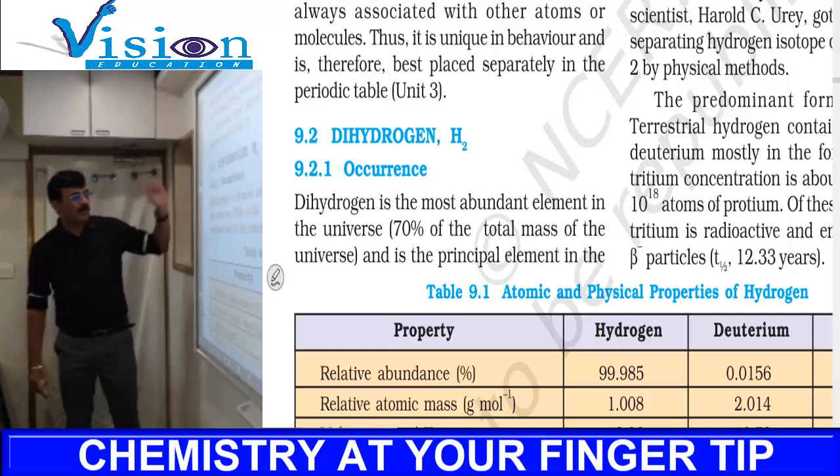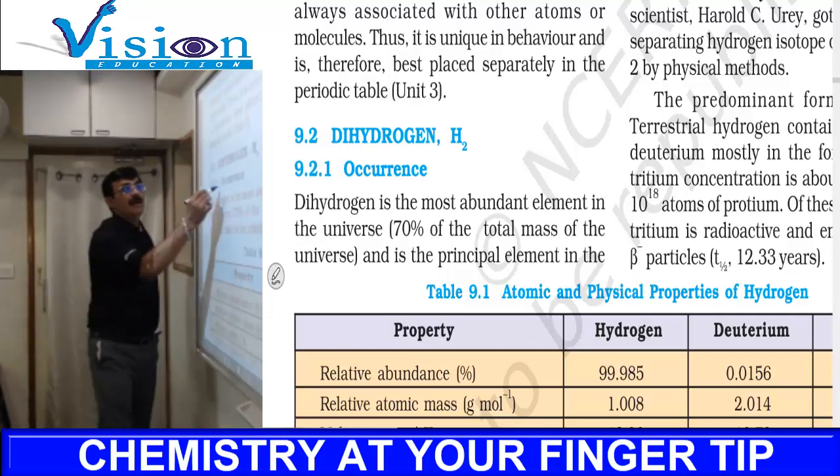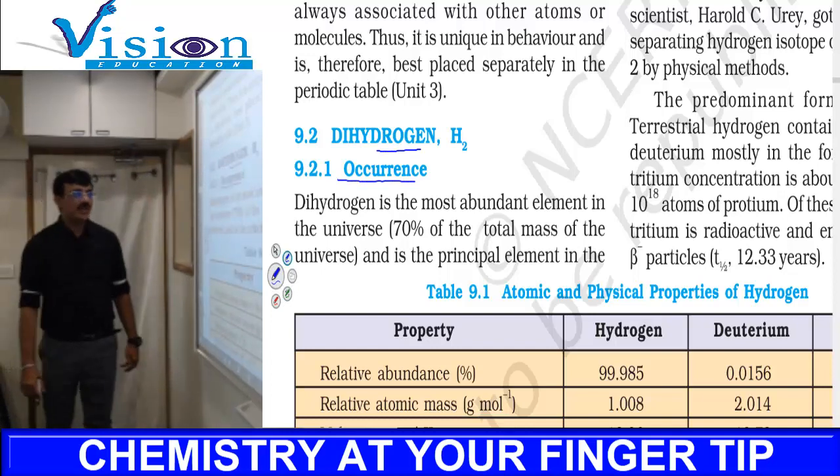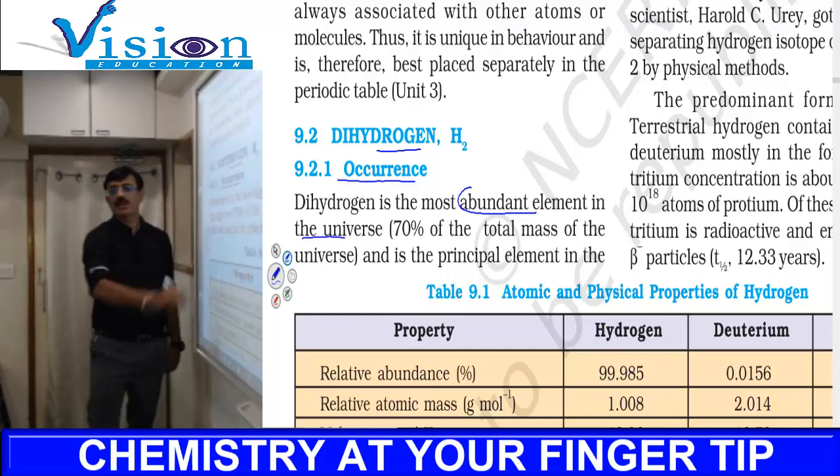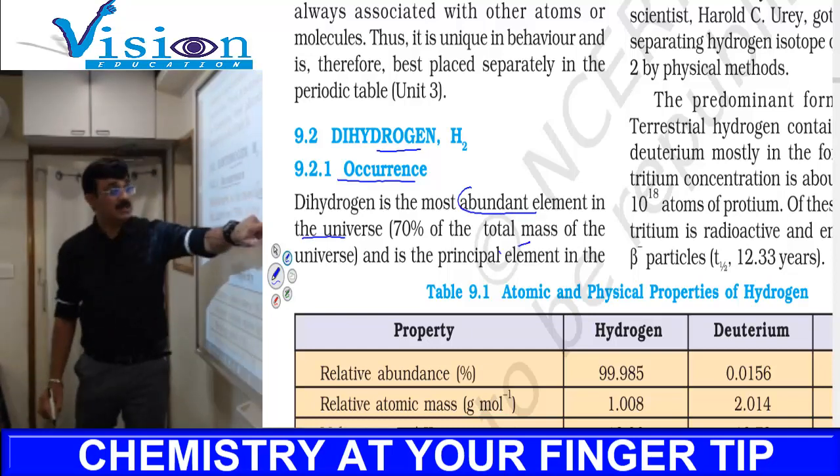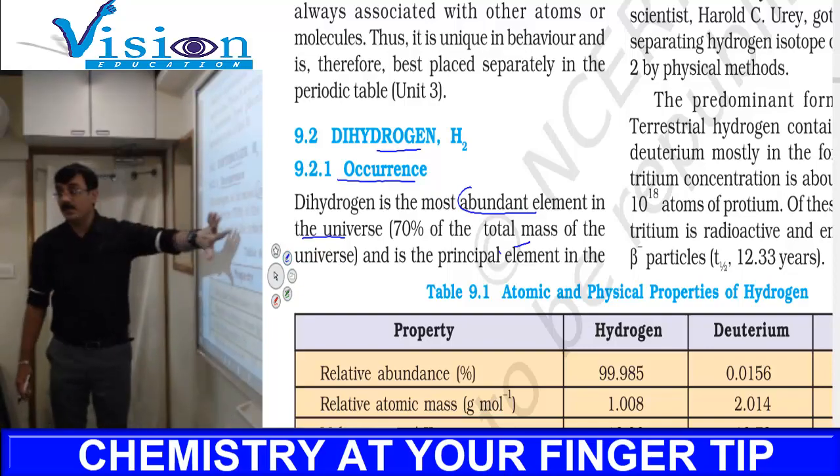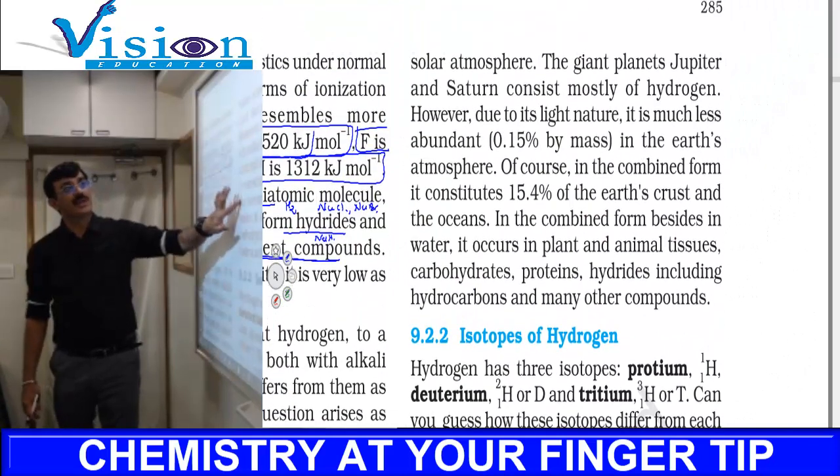After learning about the position of hydrogen, we need to learn about the occurrence of hydrogen and its isotopes. Dihydrogen is the most abundant element in the universe. In fact, 70% of the total mass of the universe is hydrogen.